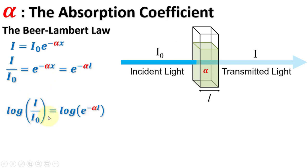By taking the log of both sides and utilizing this logarithmic relation, this is equal to minus alpha L log E. The log E value is 0.4343.